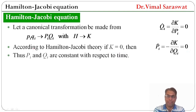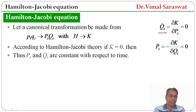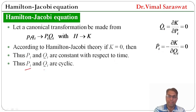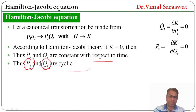Thus, P_i and Q_i — the new momentum and new coordinate — are constant with respect to time, because Q_i dot = 0 and P_i dot = 0. Therefore P_i and Q_i are cyclic; that is, the new momentum and new coordinate are cyclic because these variables are constant with respect to time.